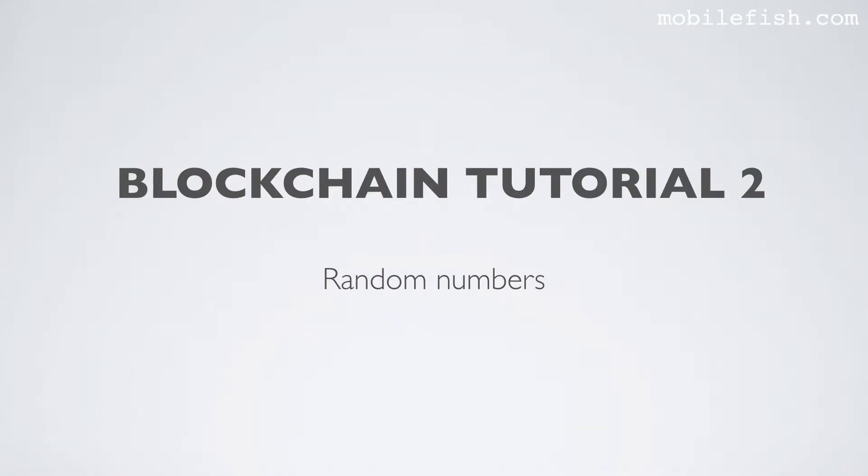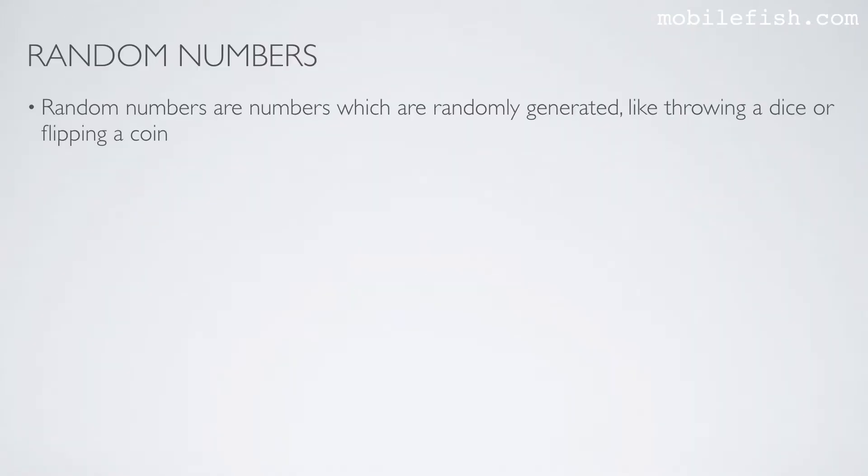In this video, I will explain what random numbers are. Random numbers are numbers which are randomly generated, like throwing a dice or flipping a coin.